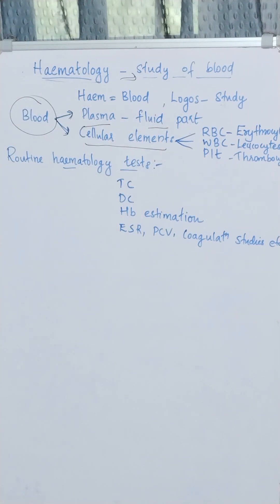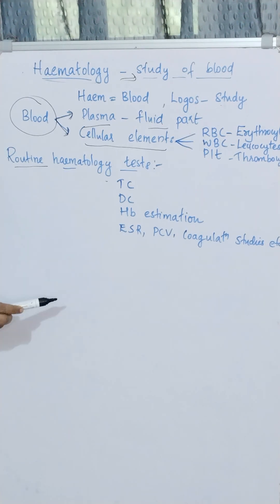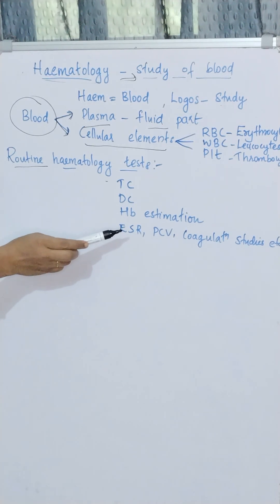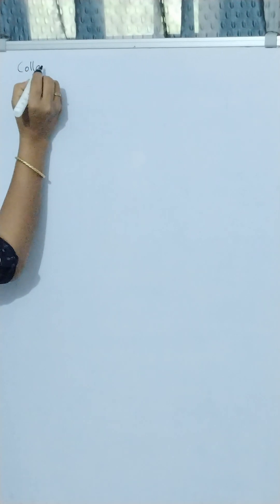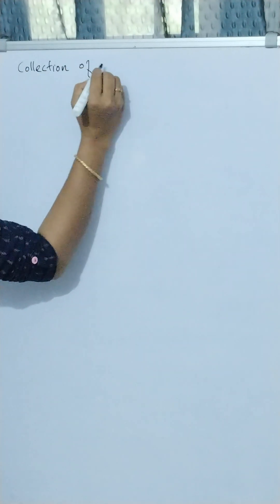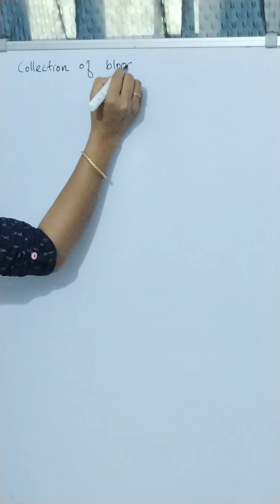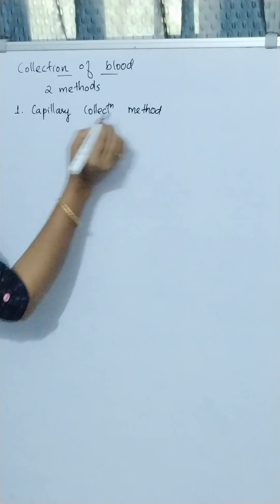The routine hematological investigations include total cell count, differential count, hemoglobin estimation, ESR, PCV, and coagulation studies. Blood for various diagnostic investigations can be obtained by capillary blood collection or venous blood collection. The method selected depends upon the amount of blood required for the investigation.